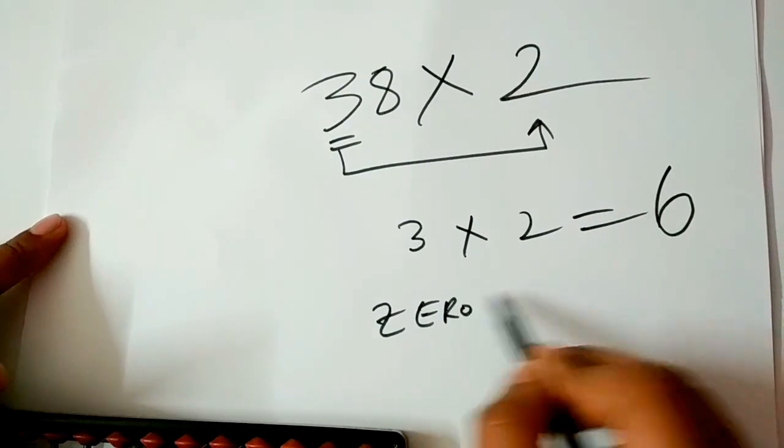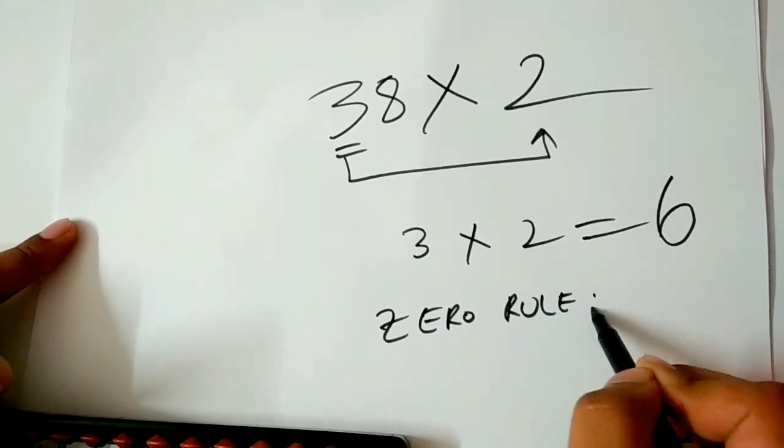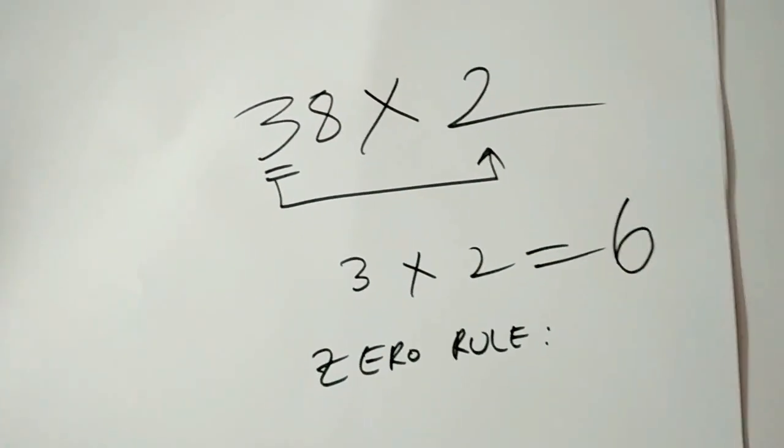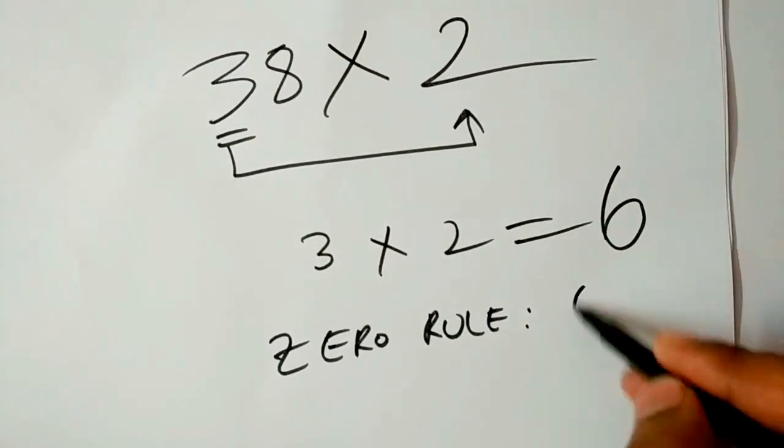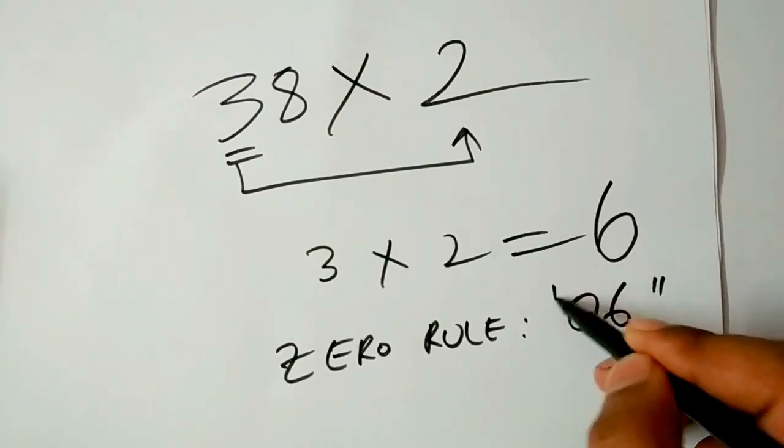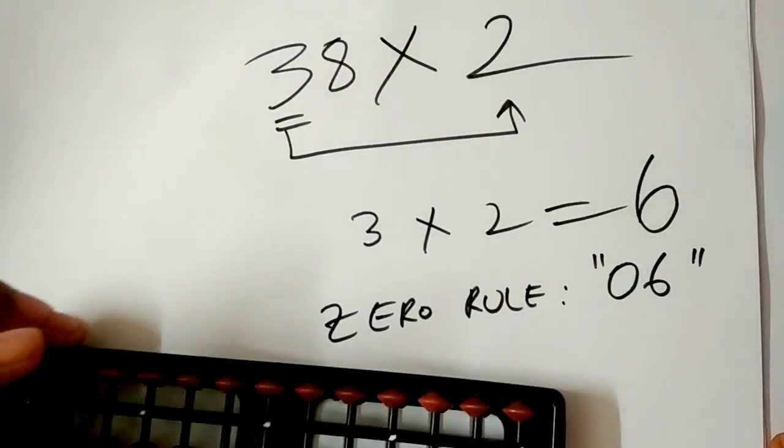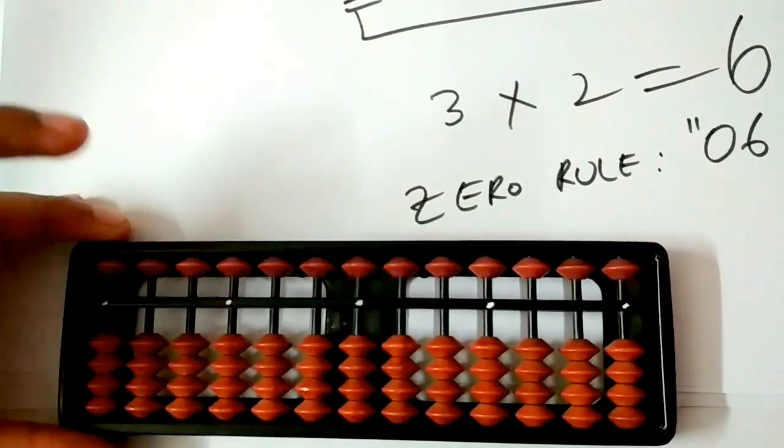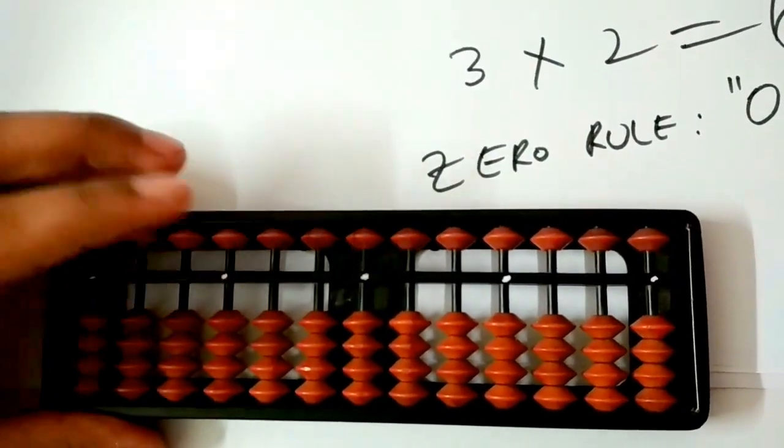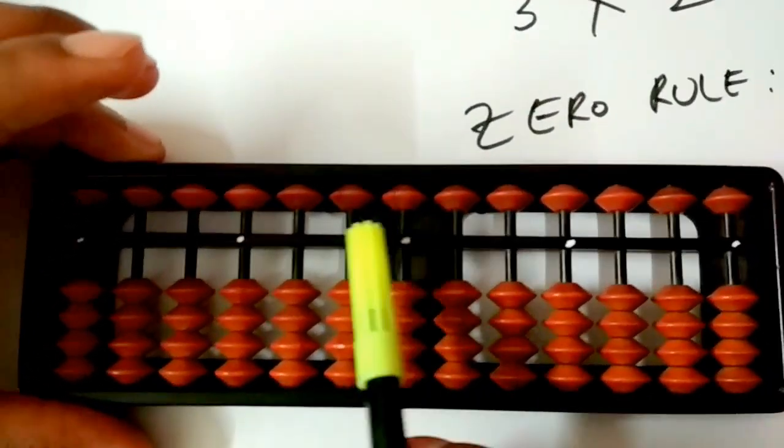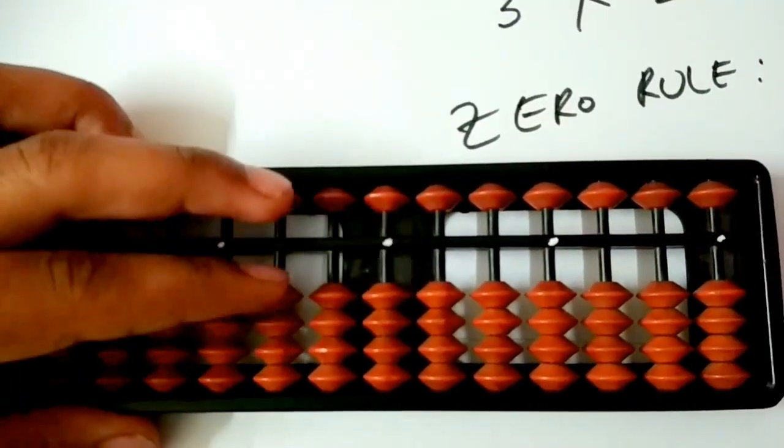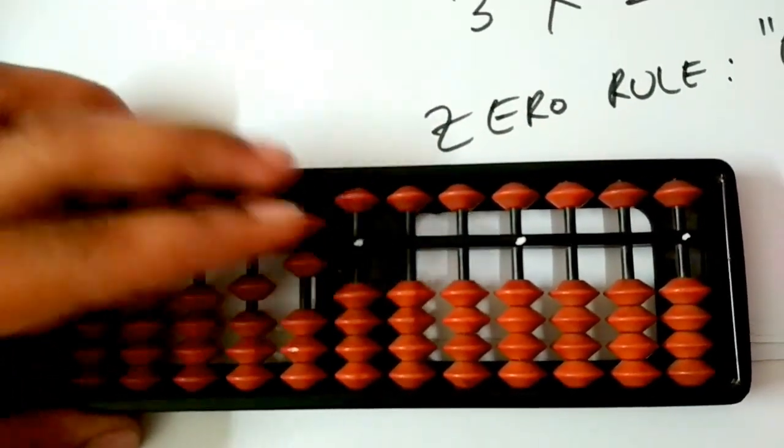0 rule states that whenever you get a single digit number in the beginning, append a 0 in the beginning. 6 is read as 06. We have to place 06 from the hundreds rod. 0 on the hundreds rod, which means we place nothing over here, and 6 is this.